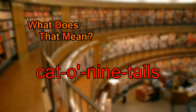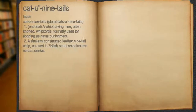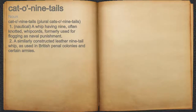What does cat-o-nine-tails mean? Cat-o-nine-tails. Noun. 1. Nautical: a whip having nine, often knotted, whip cords, formerly used for flogging as naval punishment.